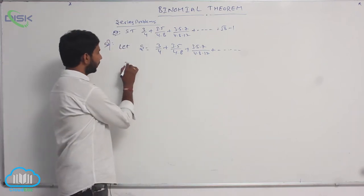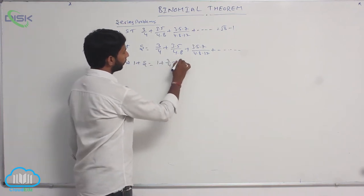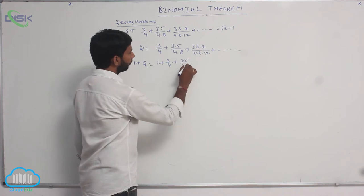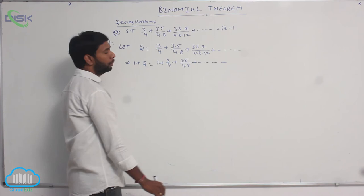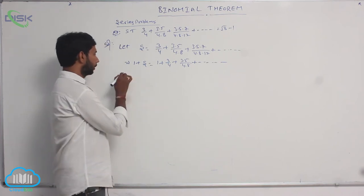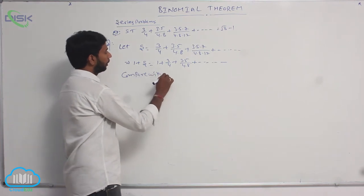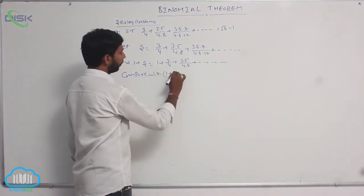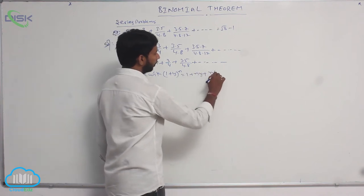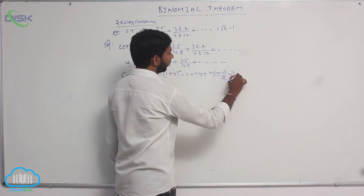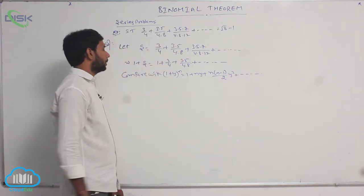Adding 1 on both sides: 1 + S = 1 + 3/4 + (3×5)/(4×8) + and so on. Compare with the binomial expansion (1 + y)^n = 1 + ny + n(n−1)/2 · y² + and so on.